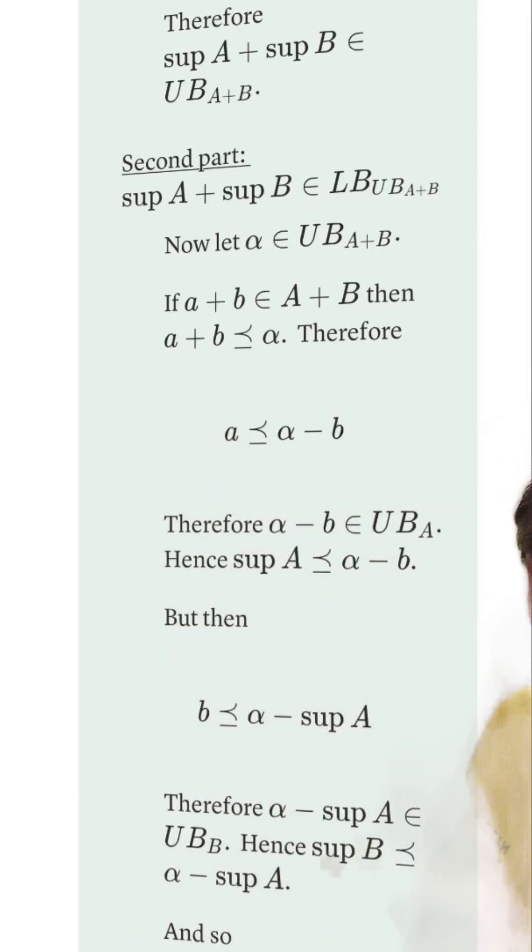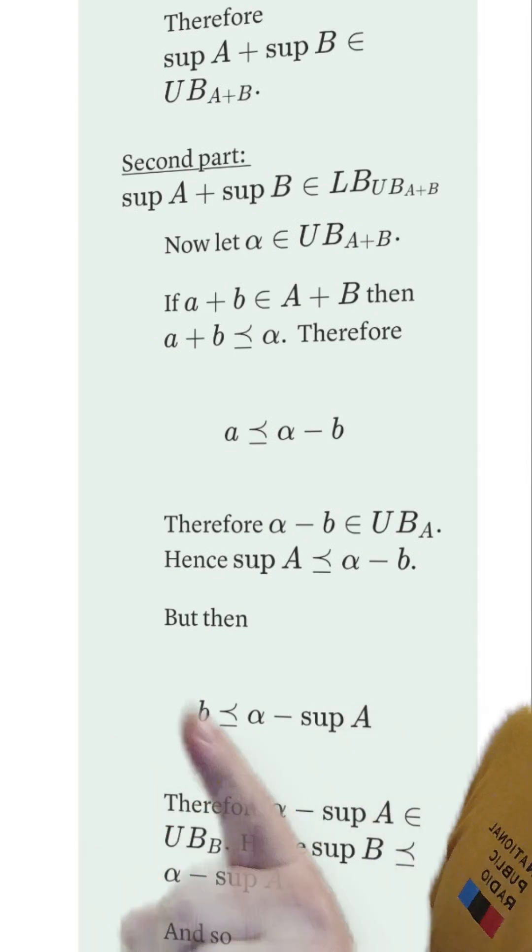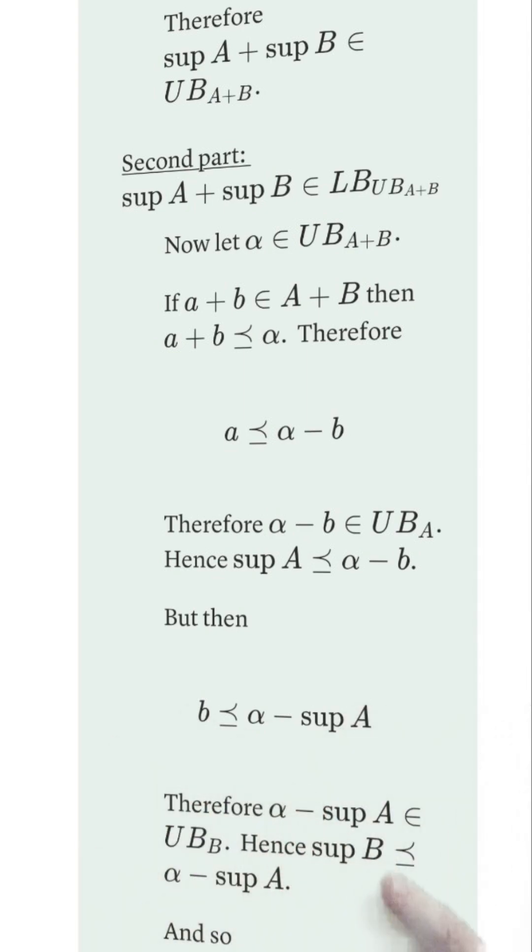the supremum has to precede it. Now we can solve for B. This means that this thing is the supremum over the set B, and therefore the supremum of B must precede it.